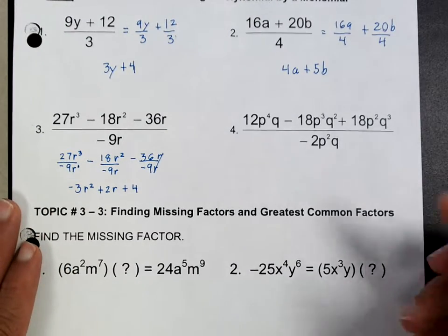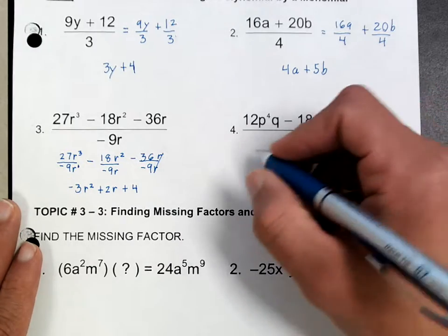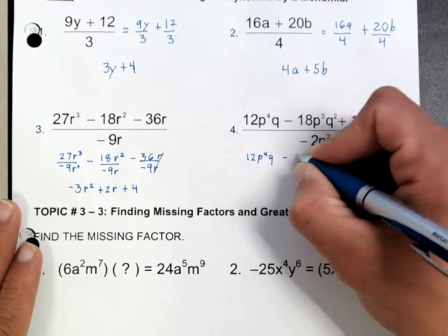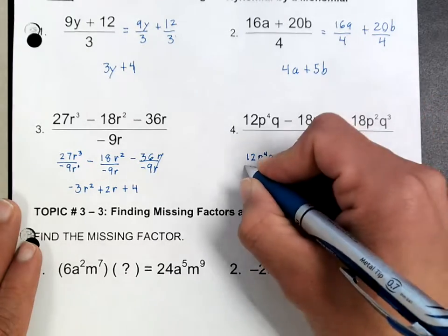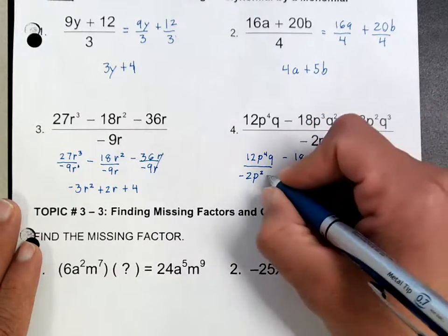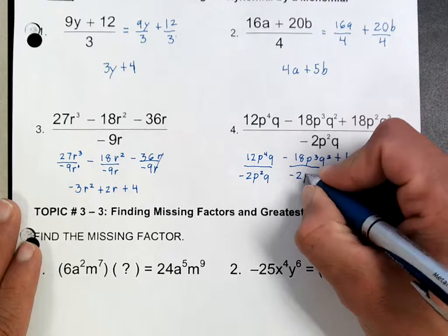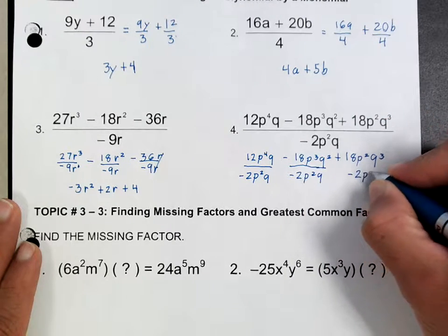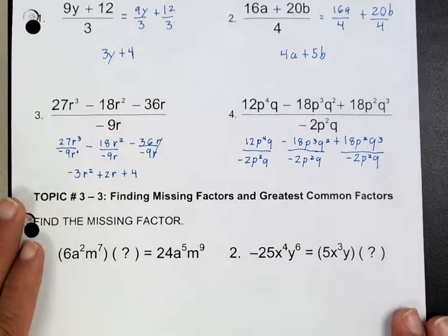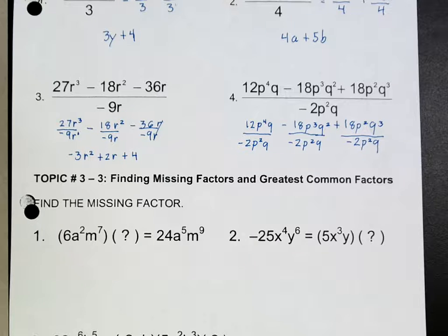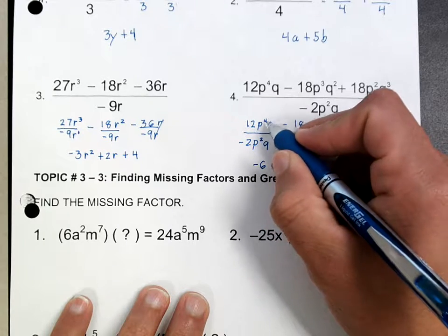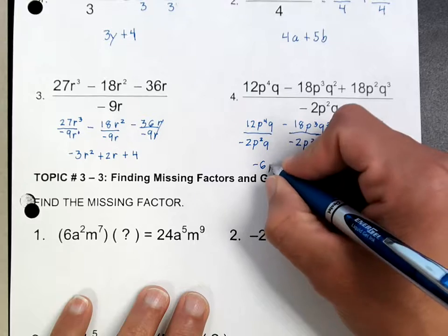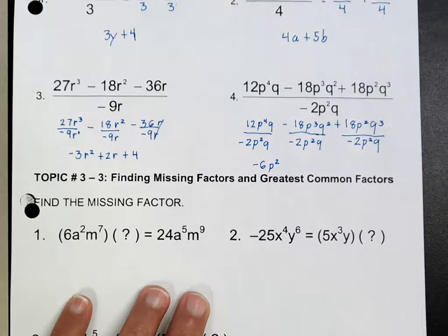Same idea on number 4. We're going to divide this by negative 2p squared q. I'm going to rewrite this. So after you rewrite it, you're dividing number with number — that would be a negative 6. p to the 4th divided by p squared: you subtract those exponents, so 4 minus 2 is 2, making this p squared. The q's cancel.